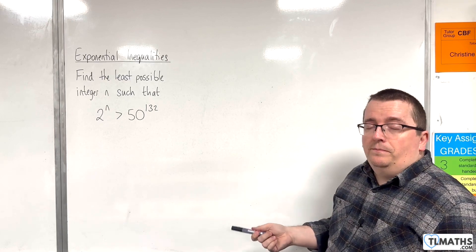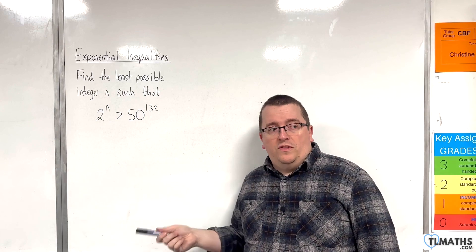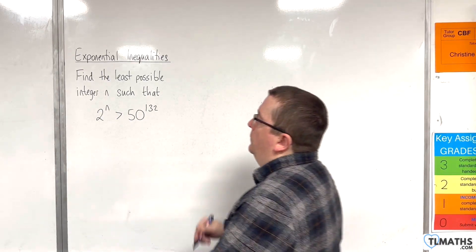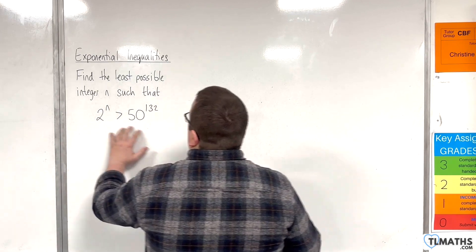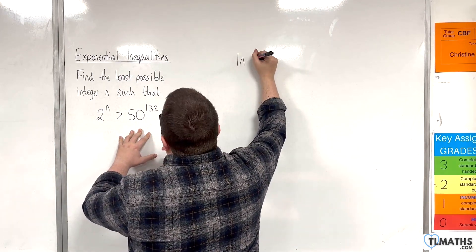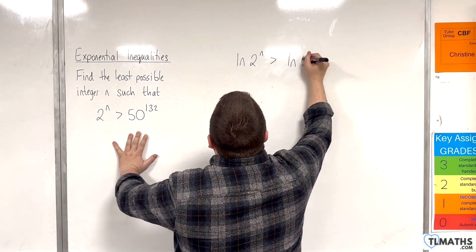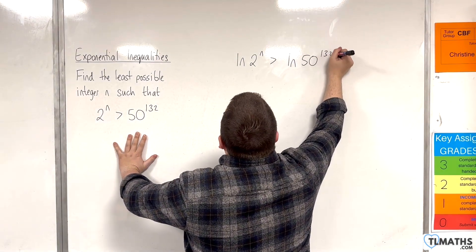So, what I'm going to do is I'm going to use logarithms, and I'm going to take the natural log of both sides. Okay, so taking the natural log of both sides, I'm going to get the natural log of 2 to the n is greater than the natural log of 50 to the 132.